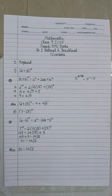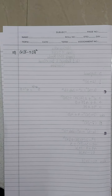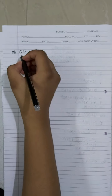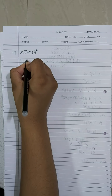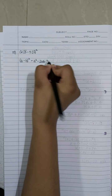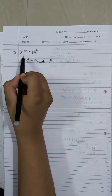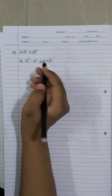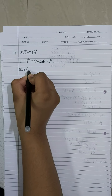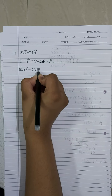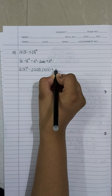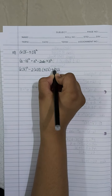Let's move on to the third sub-question: 2 root 3 minus 5 root 2 the whole square. The identity here will again be a minus b the whole square, which equals a squared minus 2ab plus b squared. Here, 2 root 3 is our a and 5 root 2 is our b. We write it as 2 root 3 the whole square, minus 2 into root 3 into 5 root 2, plus 5 root 2 the whole square.